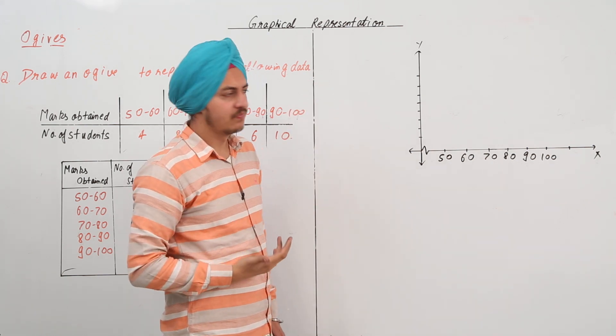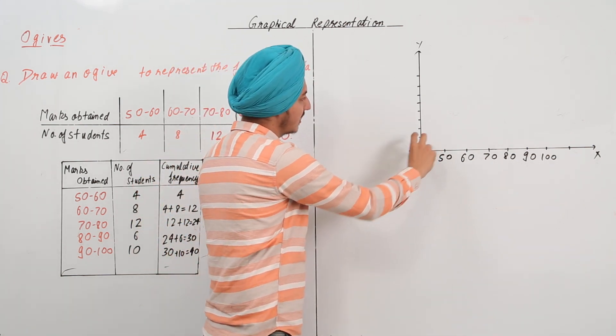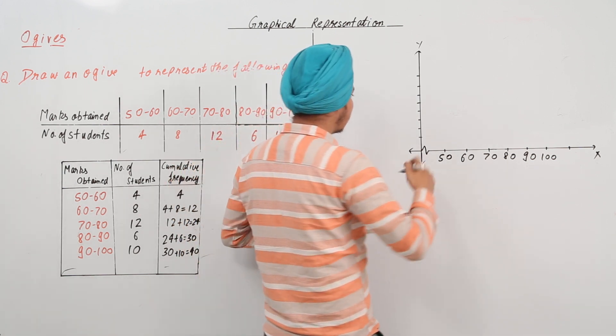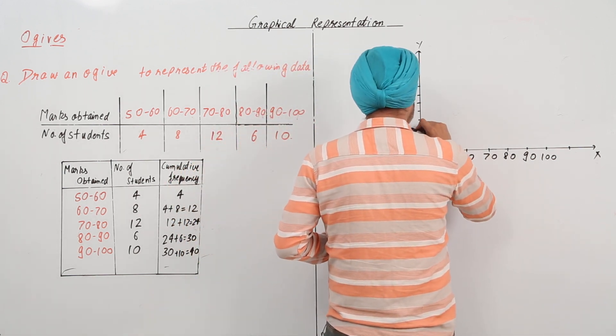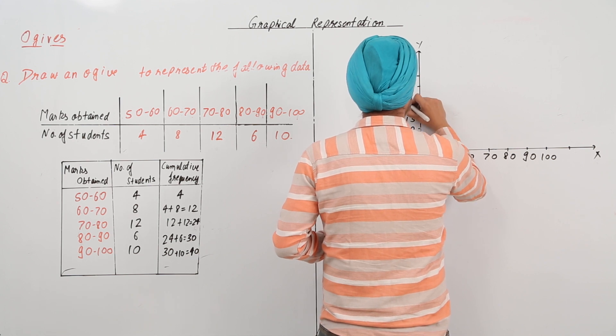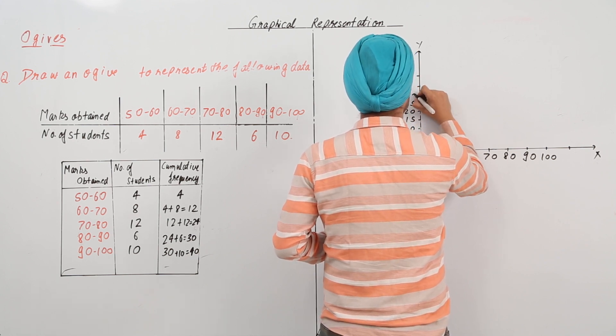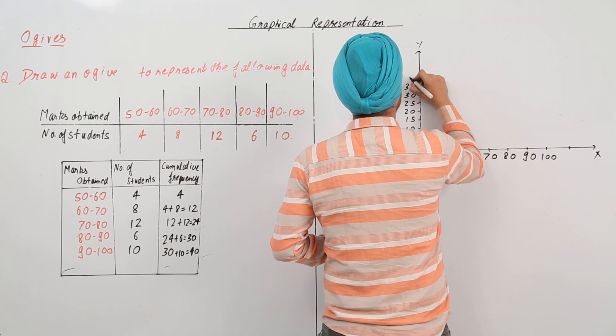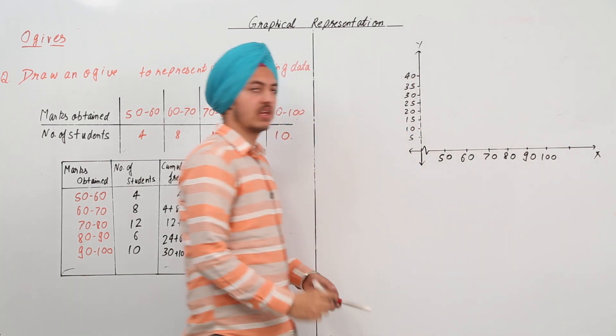So, what I am going to do is that I am going to take this much as 5. So, let's say this is 5, this is 10, this is 15, this is 20, 25, 30, 35 and 40.